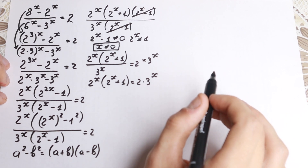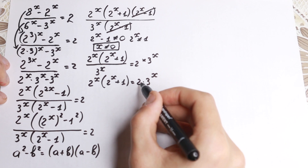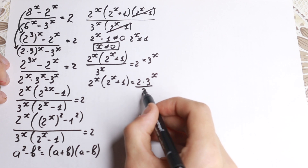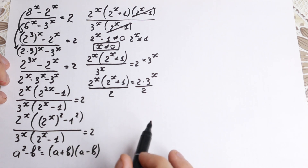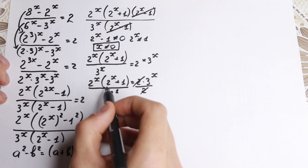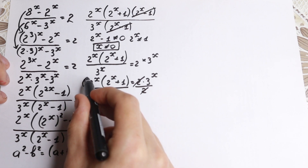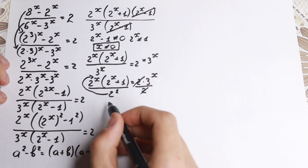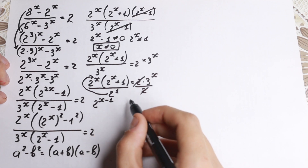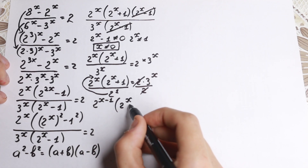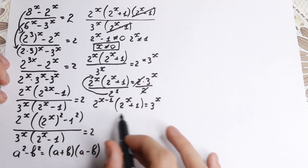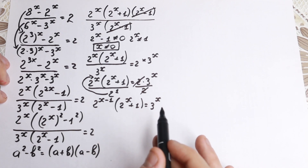We have a factor of 2 on the right side that we don't need. Let's divide both sides by 2. On the right side it cancels, and on the left side we bring the 2 to the first power into the numerator as a negative exponent, giving 2 to the power x minus 1. So we arrive at 2 to the power x minus 1 times 2 to the power x plus 1, equal to 3 to the x. This is our key expression.